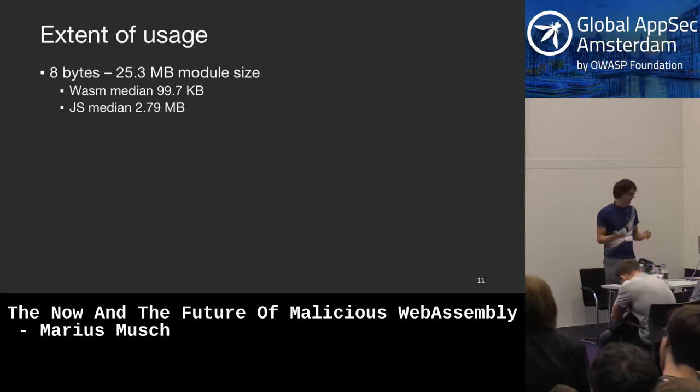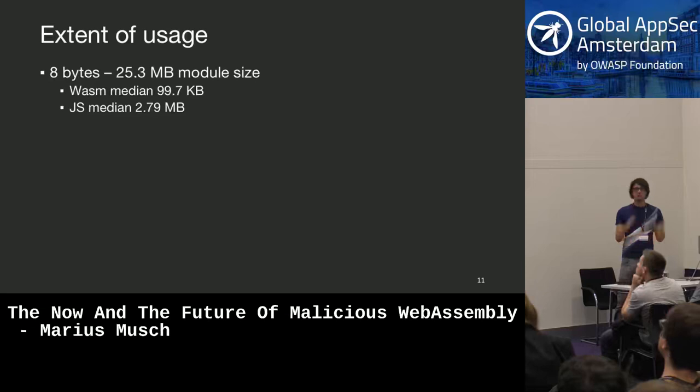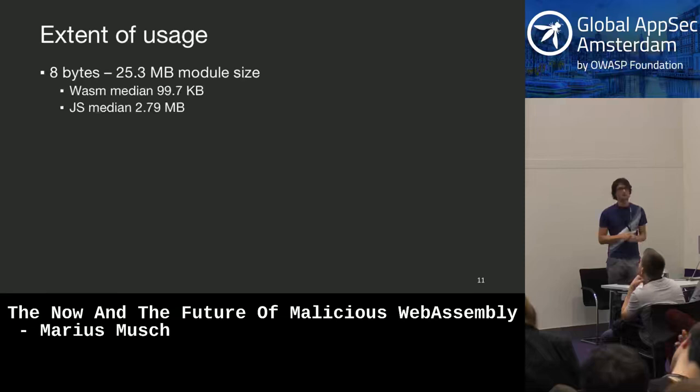The smallest module was only eight bytes, which gives you a guess about how important that might be. Others were in the range of about 20 megabytes or more. Comparing that, we can see that the JavaScript code is still much, much larger. I know that's biased because JavaScript is a textual representation while WebAssembly is binary, so we expected it to be smaller — but still, it's orders of magnitude smaller. So most of the web is still written in JavaScript, surprisingly.